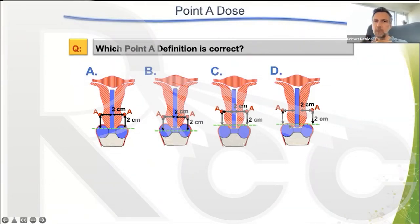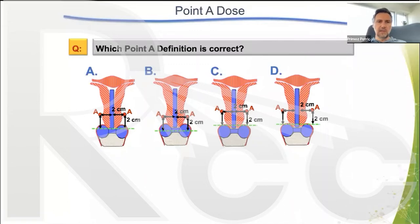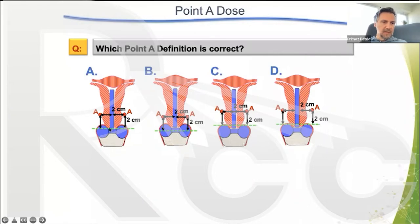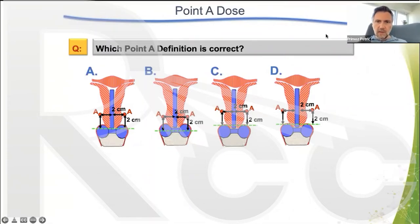Now let me ask you a question. Which Point A definition do you think is correct? Is it A, where the distance is measured two centimeters from the top of the flange upward and two centimeters lateral on each side? Or is it B, where the distance is measured from the center of the ovoids two centimeters in the cranial direction? Or is it C or D? Please type your answer — A, B, C, or D — in the chat.